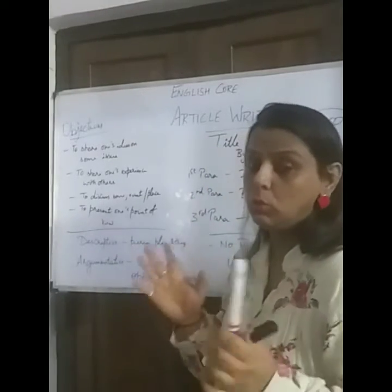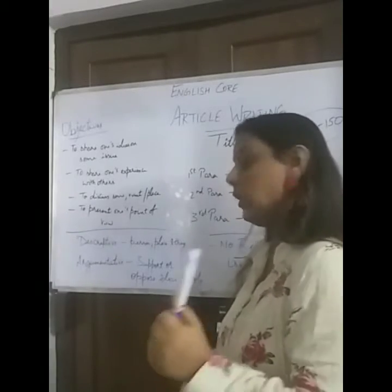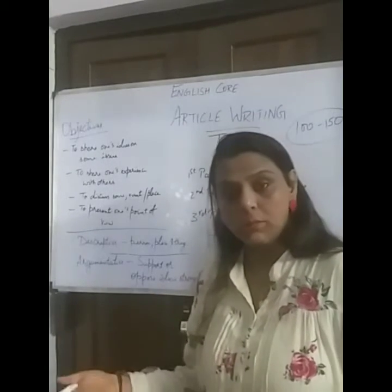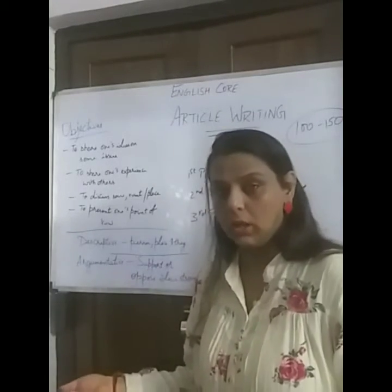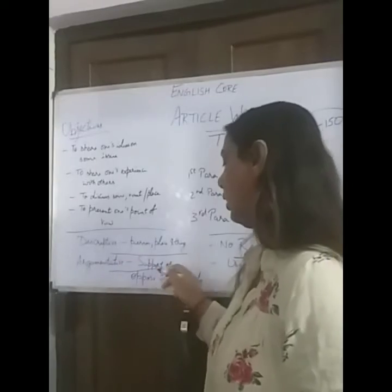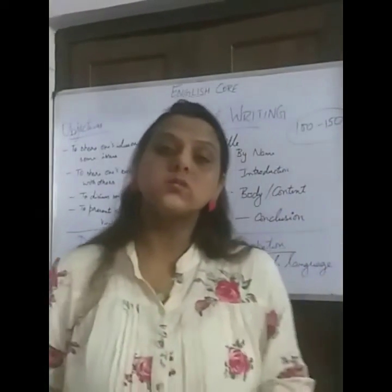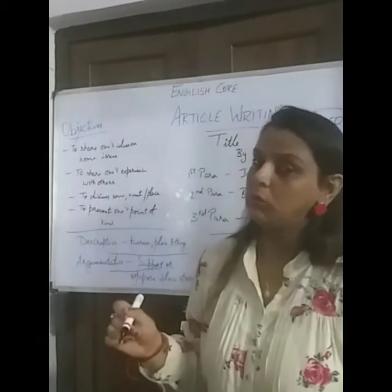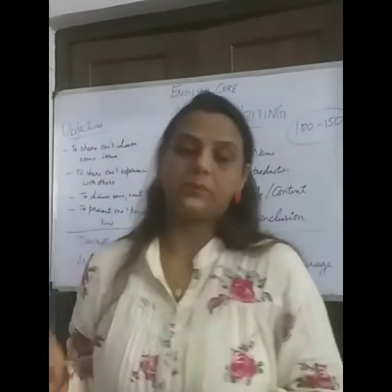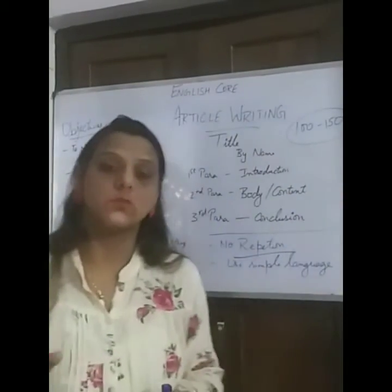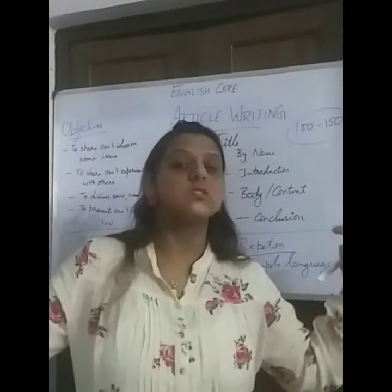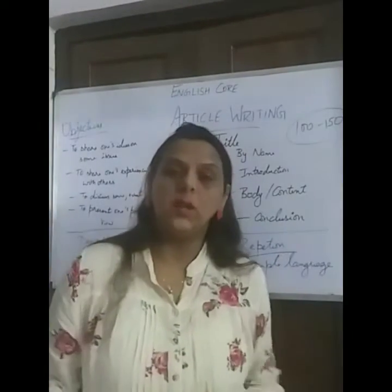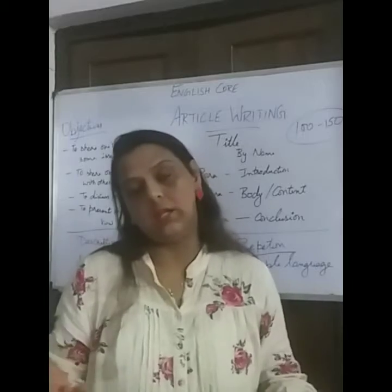There are two important types of article writing. The first is descriptive, where you describe a person, place, or thing and give your views about it. The second is argumentative, where you are strongly supporting or opposing something. Whatever you write, try to write in general — do not use 'I' repeatedly; write about what you have witnessed or what people should understand.